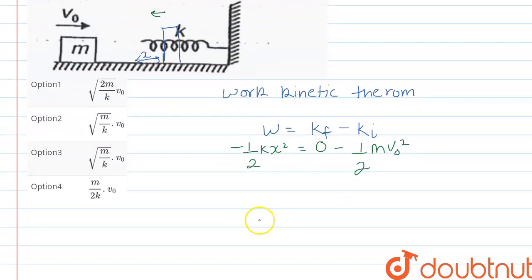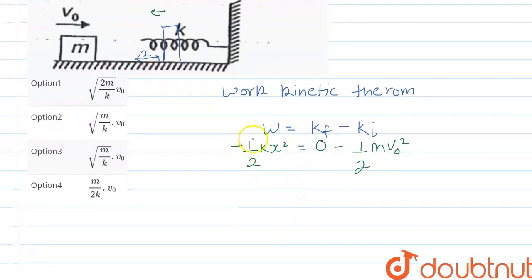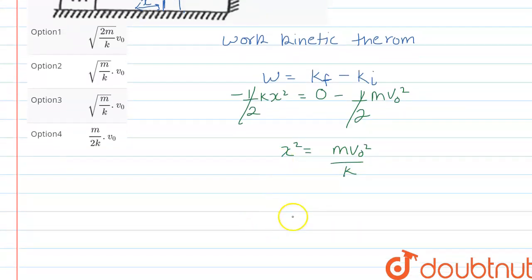Now solving this for x squared, we will be getting, this minus one by two cancels this minus one by two, and x squared will be m v naught squared upon k. So taking under root on both sides, we will have x is equal to under root of m upon k into v naught.